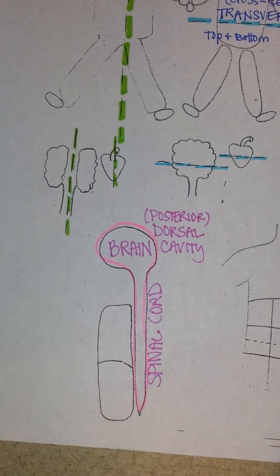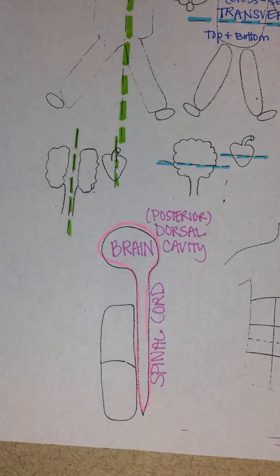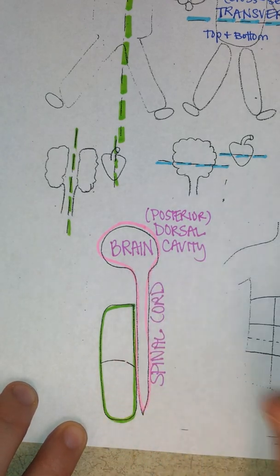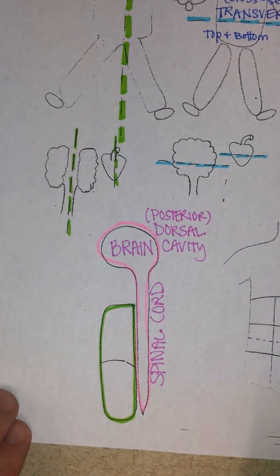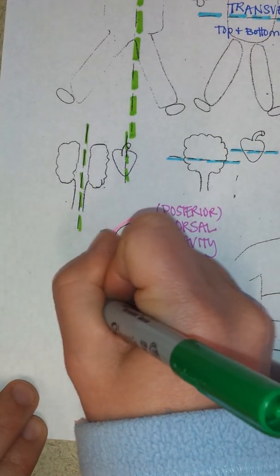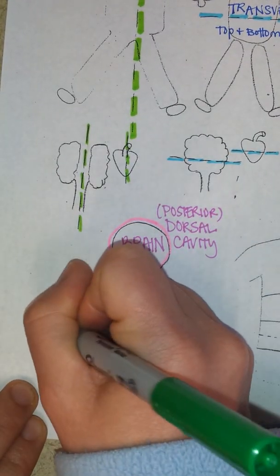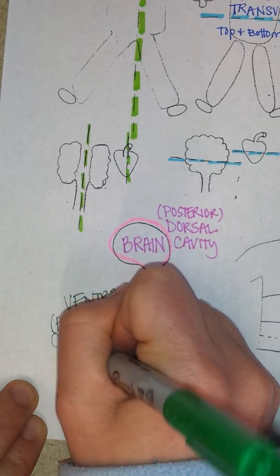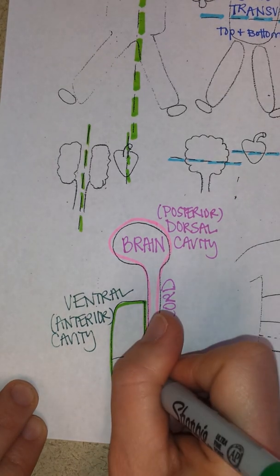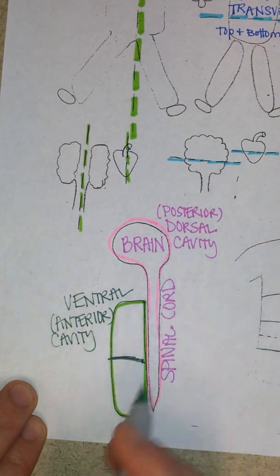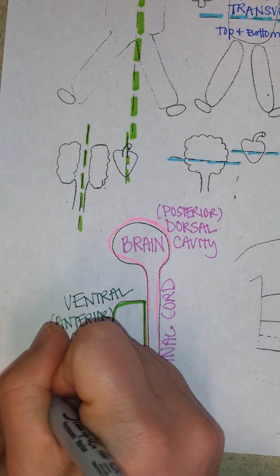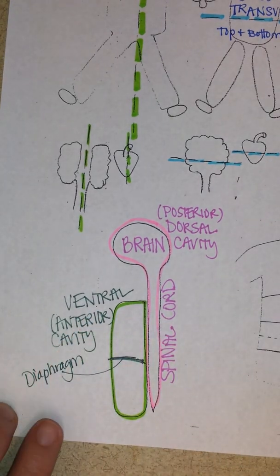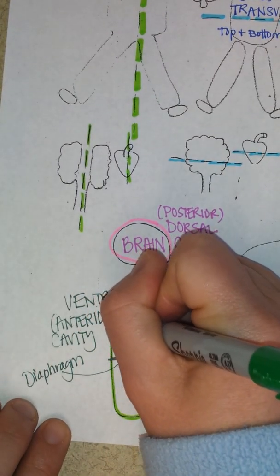So then the ventral cavity, anterior cavity, that's what this represents. I'm using a green highlighter for this. The ventral or anterior cavity has a clear demarcation that separates it into a top and a bottom. That separation is accomplished by the diaphragm. We call the upper part the thoracic cavity.